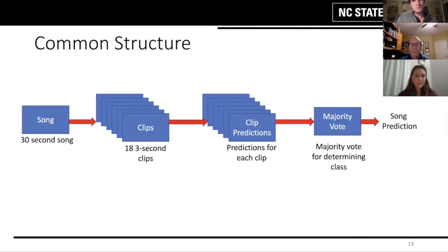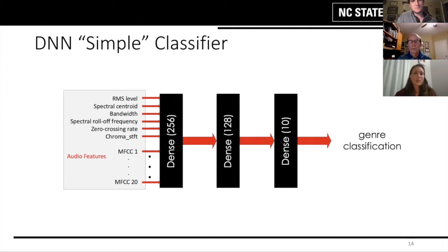Looking at our model structures, as Mike mentioned, we trained multiple types of models. To compare them apples to apples, we used a common structure for reading in and predicting on song clips. One model was a very simple dense neural network classifier that looks at static features — not time dependent — aggregated over the song clips. It puts those features directly into a dense neural network layer and goes through some dense layers before outputting a genre classification.